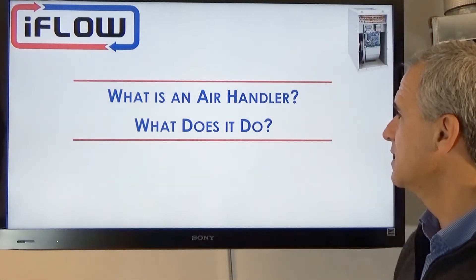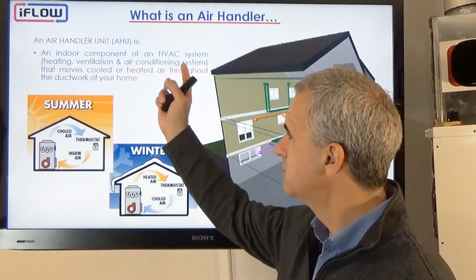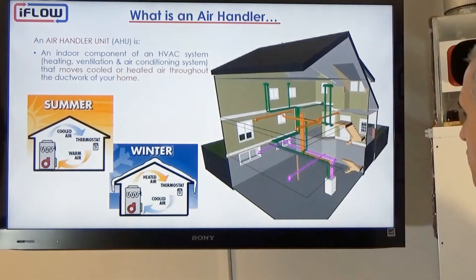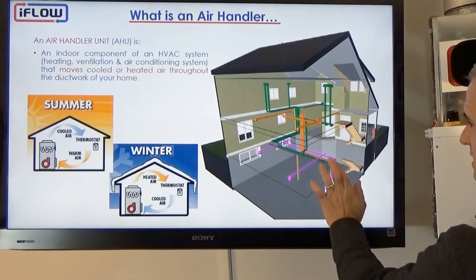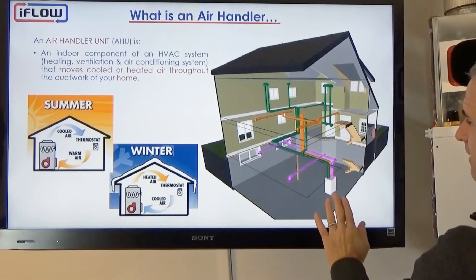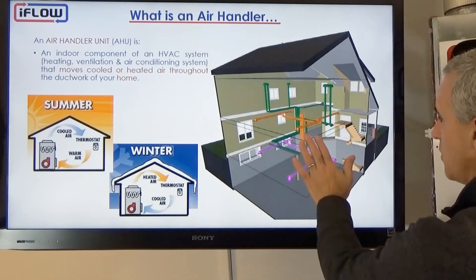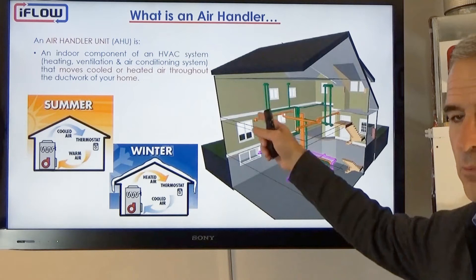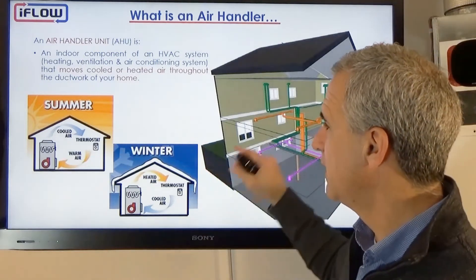An air handler is an indoor component of your HVAC system that moves the cooled or heated air throughout the ductwork of your home. We have a cross section of a home with an iFlow unit in the basement, and ducting going to the basement, the main floor, and the upper floor. All distribution is buried in the wall cavities. We push the heating and cooling through this ducting, it goes into each of the rooms, and then a return brings that air back to the air handler where we heat or cool it and send it around again.